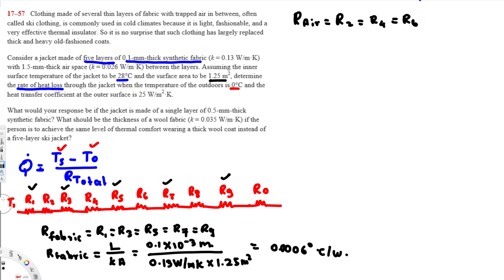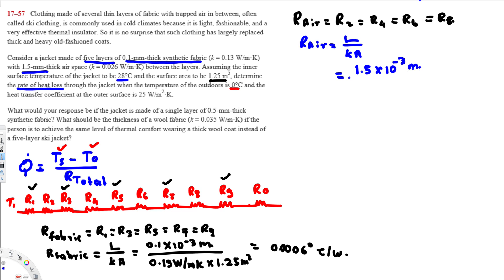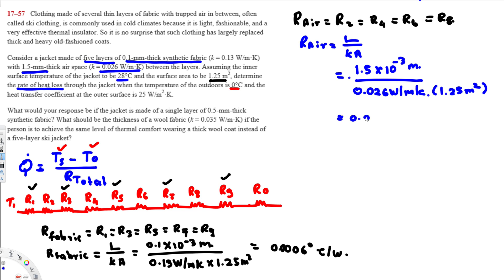For one air layer: thickness = 1.5 mm = 1.5 × 10⁻³ m, thermal conductivity of air k = 0.026 W/m·K, and area = 1.25 m². Using R = L/(kA), we get R_air = 0.0462°C/W.